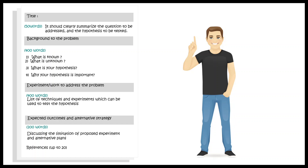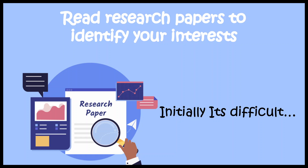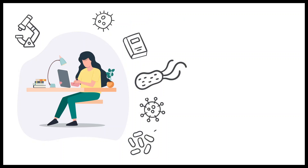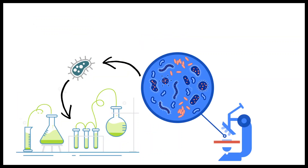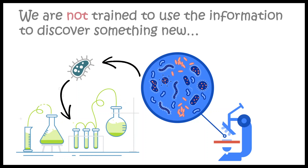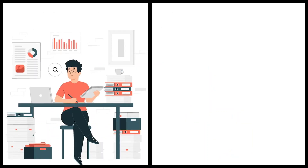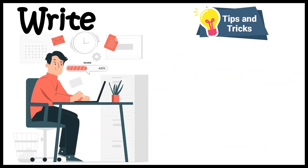If you approach this methodologically, it's not that tough. Start by reading research papers. This may be hard because you are generally trained to memorize information and get marks — not to use that information to think of something unexplored or new. So you should start practicing critical thinking. The process is: first read, then think, then write. Here are some tips and tricks to make that journey easier.